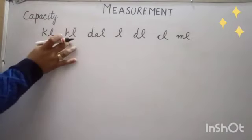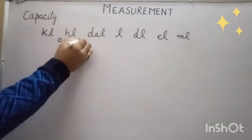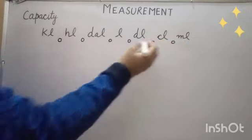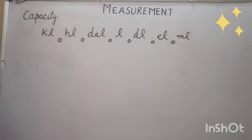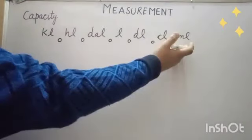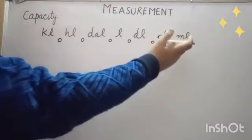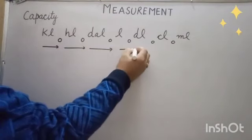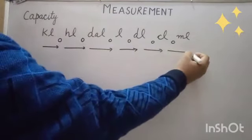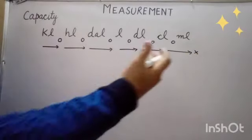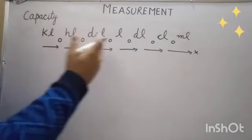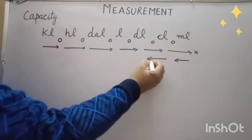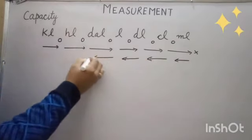Between 2 units there is a gap of 10. While converting the units, if we move from bigger to smaller or left to right, we have to multiply. And if we move from smaller to bigger or right to left, we have to do division in that question.